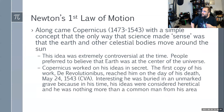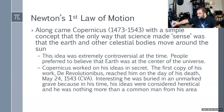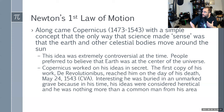Along came Copernicus with the concept that the only way science made sense was if the earth and other celestial bodies moved around the sun — the sun must have been massive, creating its own field that caused the planets to orbit it. This was extremely controversial. Copernicus worked on his theories in secret; the first copy of his work reached him on the day of his death in 1543. He was buried in an unmarked grave because his ideas were considered heretical.